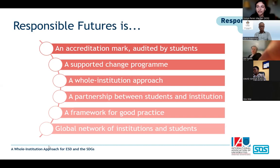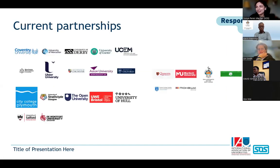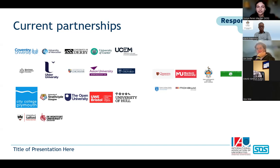Last year, with so many excellent outcomes and learnings, we wanted to work internationally and partnered with IAU to deliver the international pilot of Responsible Futures. We're working with seven institutions across the world, including the University of the West Indies. The program is a supported change program for a whole institution approach — we partner students with their institution, provide a framework of good practice co-created by all pilot institutions, and support engagement through a range of different supports. It's a global network of institutions currently including 18 UK partnerships and seven international institutions in Canada, Ireland, the Caribbean, Zimbabwe, Lithuania, and Western Australia.